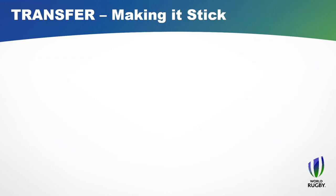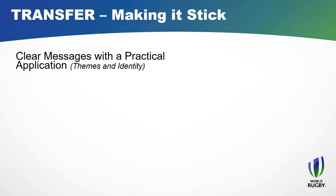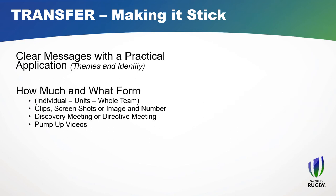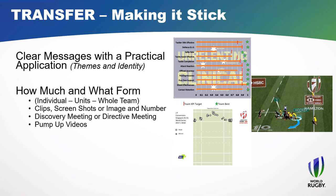Making it stick — the transfer of information. Making sure we have clear messages with a practical application. Go back to those themes and identity: for us, the unrelenting, clinical and united. Or looking at Paul Gustard's presentation — knowing exactly what we wanted for our defence, with the suffocate, the strangle and the squeeze. There'd be no reason we couldn't use this as part of our review and put up our defensive numbers or KPIs with that. How much information do we want to share, and in what form? Are we looking at individuals, units, or the whole team? A clip, screenshot, image or number can be just as effective.